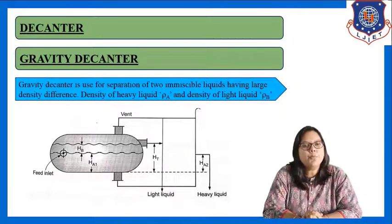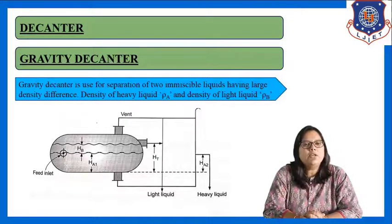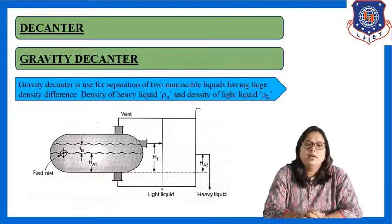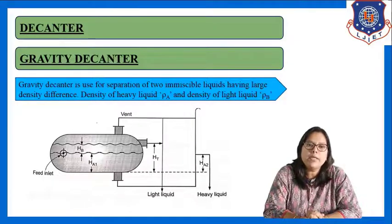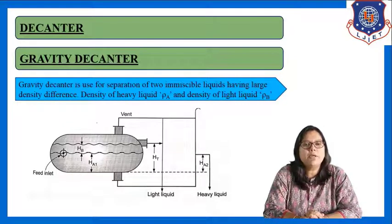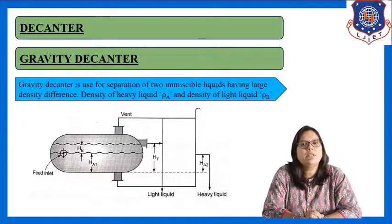A decanter is the equipment in which the decantation process occurs. There are two types of decanter: gravity decanter and centrifugal decanter. Gravity decanter is used when the density difference between the two liquids is large, and centrifugal decanter is used when the density difference between the two liquids is small.